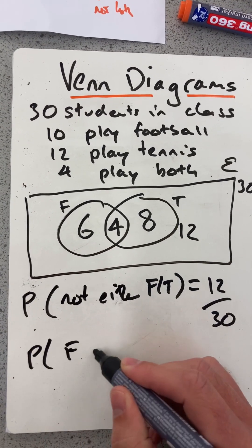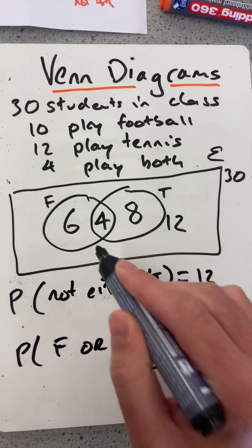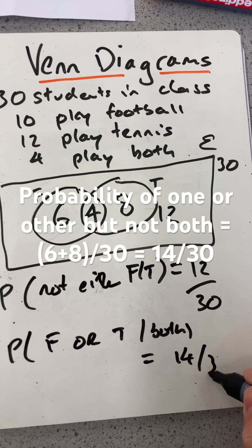What about the probability of them playing football or tennis, but not both? Well, that'll be the 6 plus the 8, 14 out of 30.